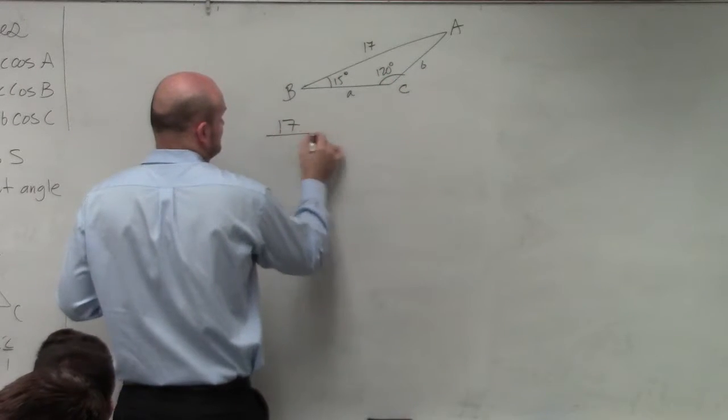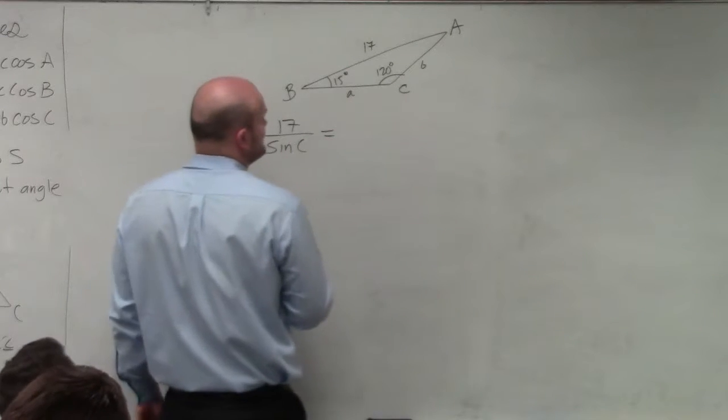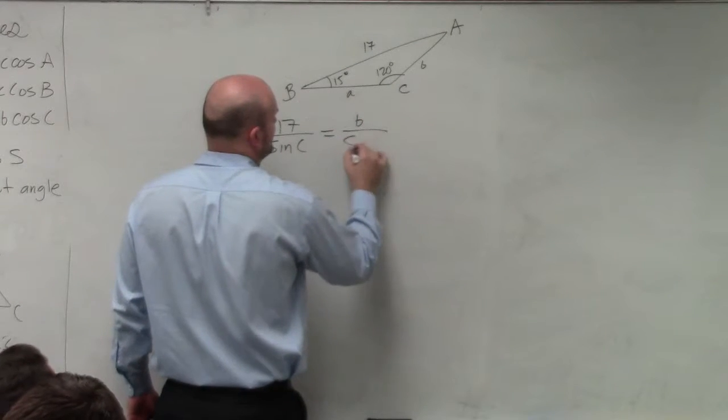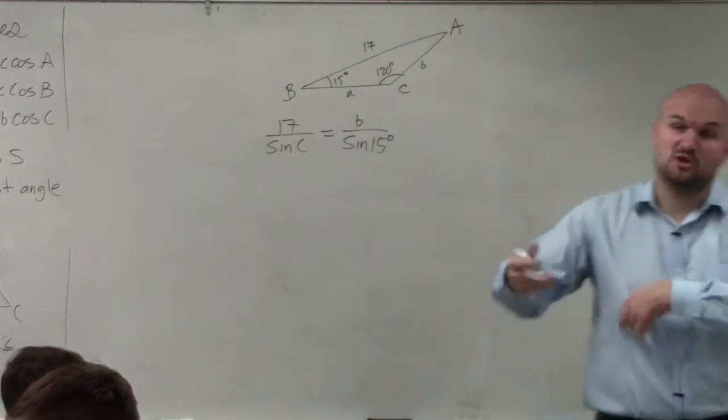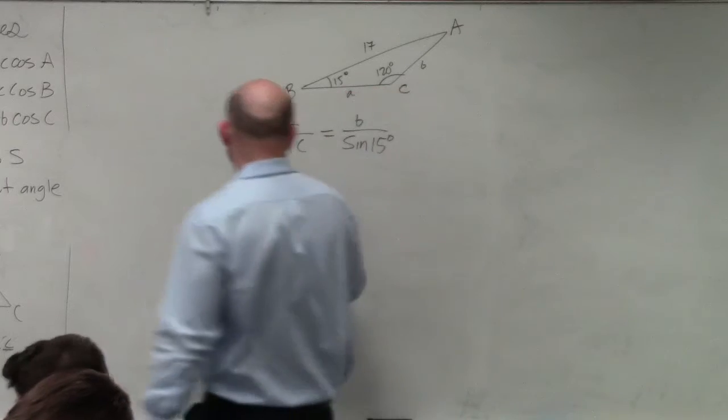So I would write this like this: 17 over the sine of C is equal to B over the sine of 15 degrees. Right?